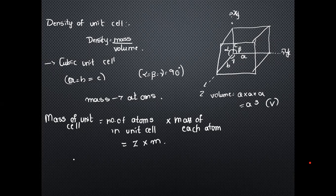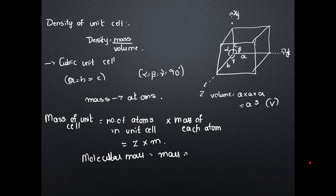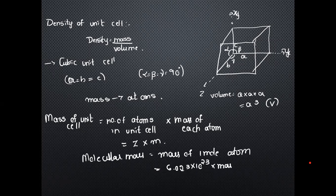Molecular mass is the mass of one mole of atoms. One mole equals 6.023 × 10²³ atoms, multiplied by the mass of each atom. Therefore, the mass of one atom equals molecular mass divided by Avogadro's number.